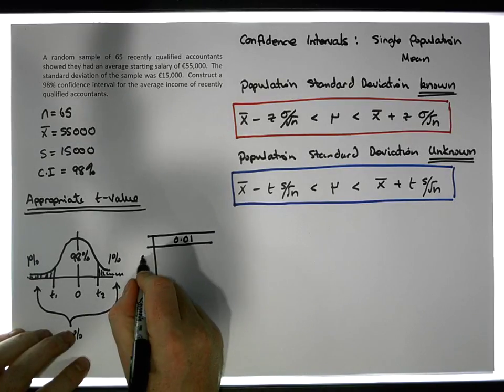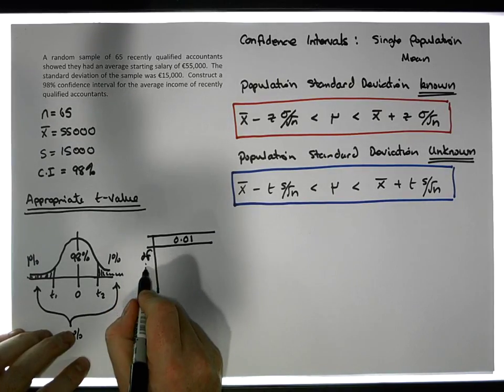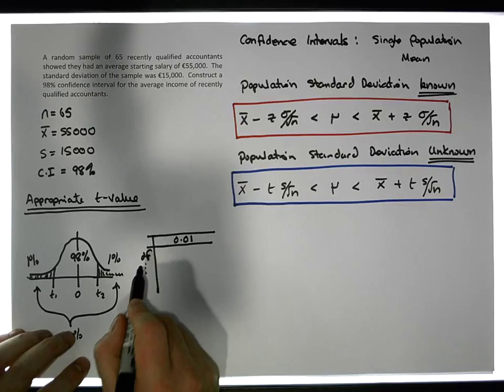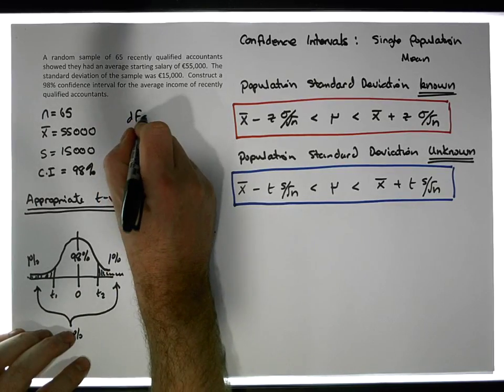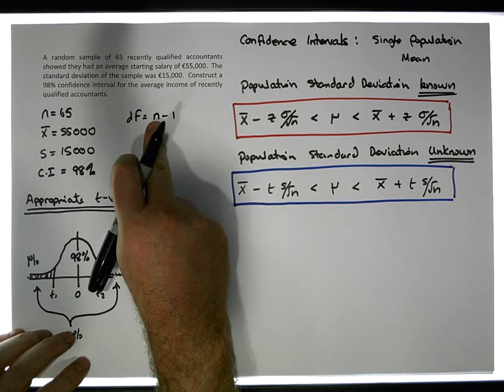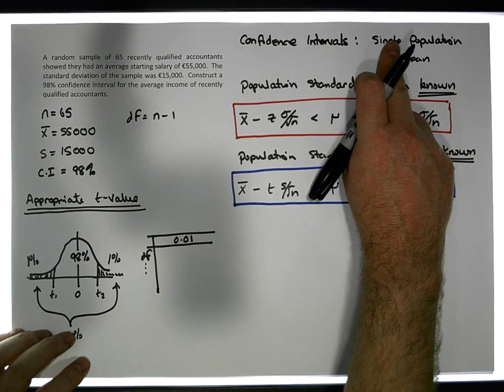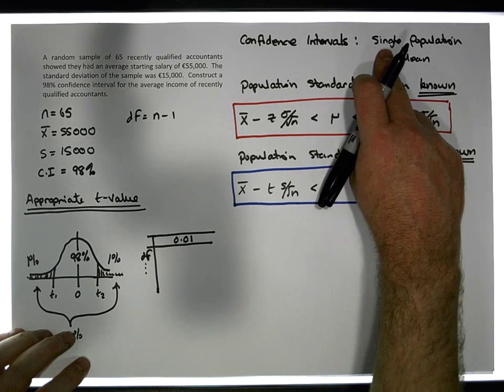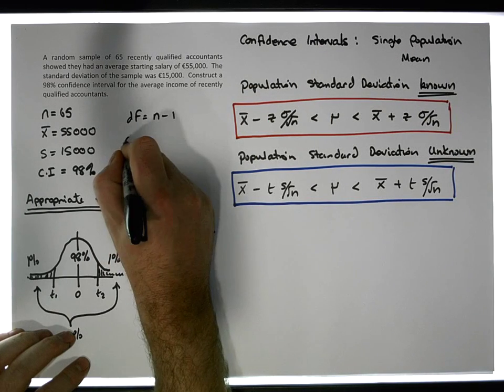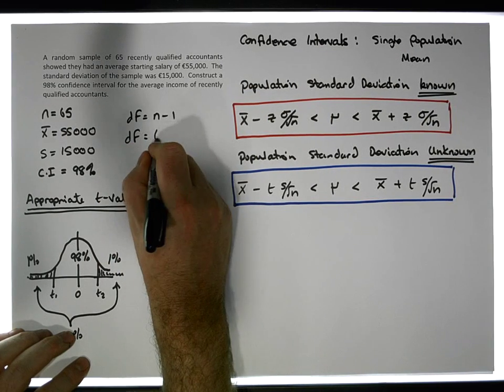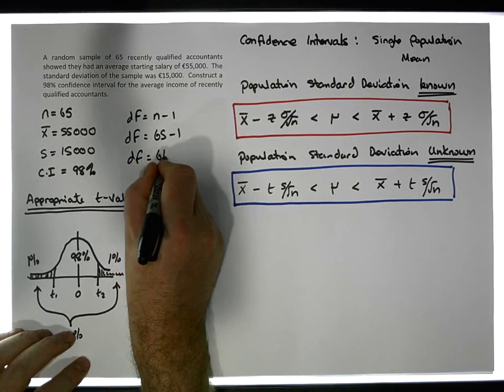We also need our degrees of freedom. The t-distribution is parameterized by the sample size. For a confidence interval for a single population proportion, the degrees of freedom equals the sample size minus one. In our situation, degrees of freedom is 65 minus 1, which gives us 64.